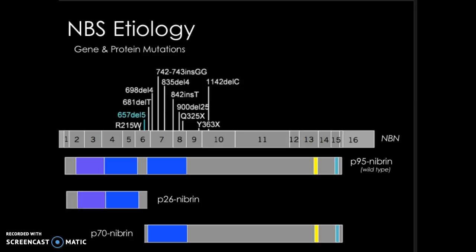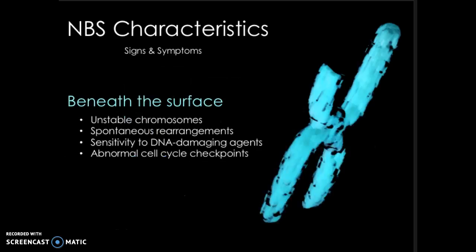The results of this are devastating to those affected. Because Nibrin is expressed in every cell of your body, mutations to it leave everything susceptible. In these cells, NBS leads to unstable chromosomes, spontaneous rearrangements, abnormal cell cycle checkpoints, and sensitivity to DNA damaging agents such as radiation and chemotherapy — all of which increase the chances of accumulating DNA errors throughout the body.